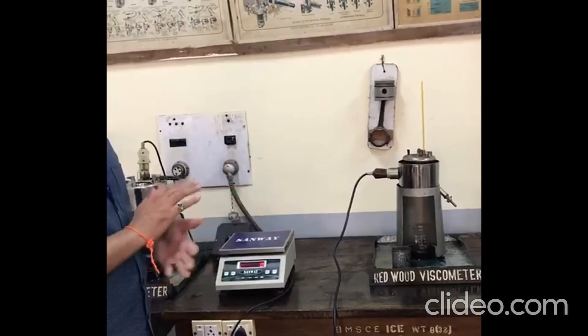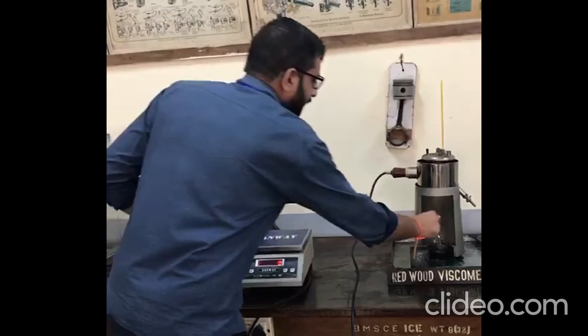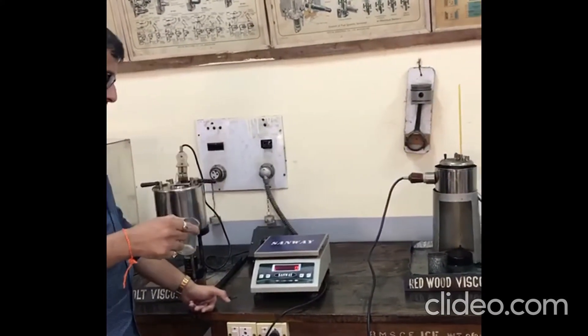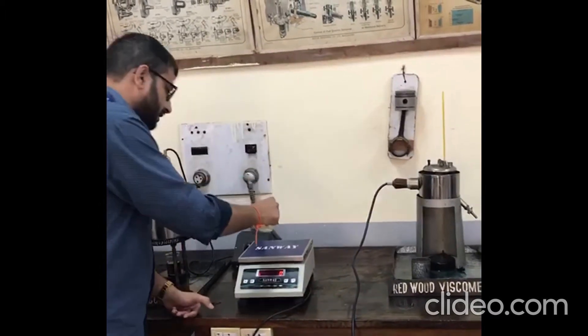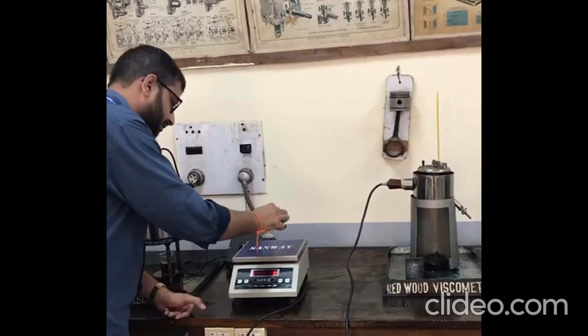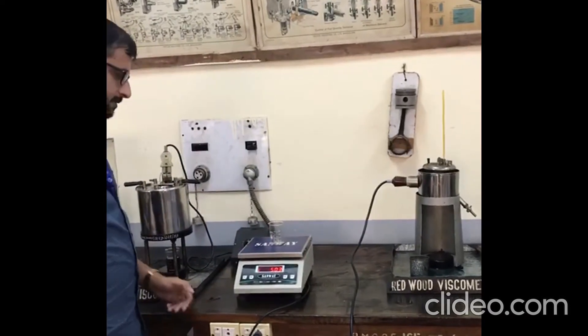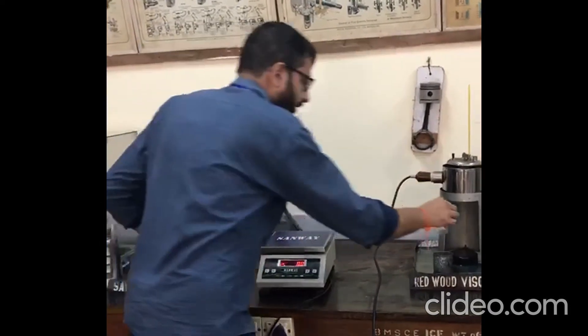The procedure of this experiment is: first of all we need to measure the weight of this beaker, the empty beaker, on this electronic weighing balance. So it is 50.4 grams.